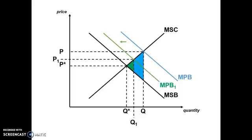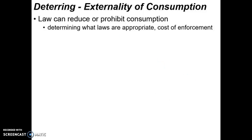Another way to address the negative externality of consumption is through a law. You don't really show this on a diagram — you just explain it. You could make a law that bans cigarettes outright, or reduce cigarette consumption by raising the minimum age or restricting where they can be consumed. The challenge with laws is always determining what type is appropriate — you don't want to infringe on people's liberty, and you have to consider whether it's practical to enforce. Taxes, advertising, and laws are all different options for deterring negative externalities of consumption.